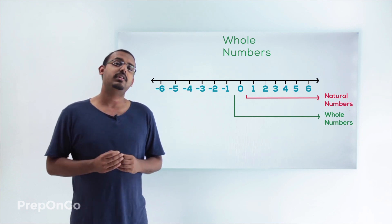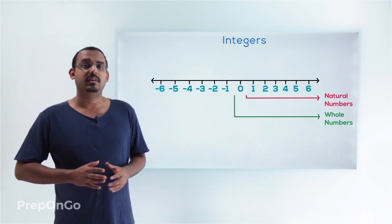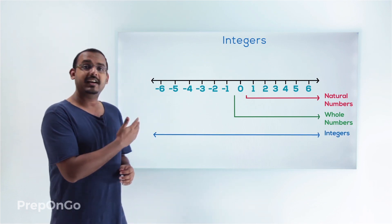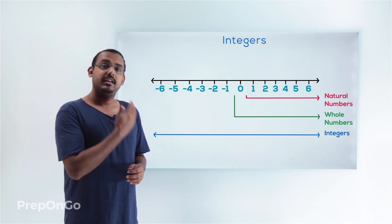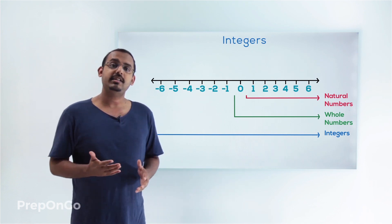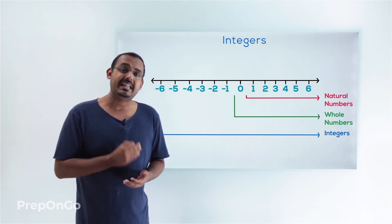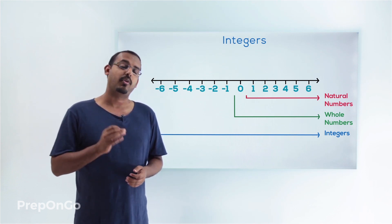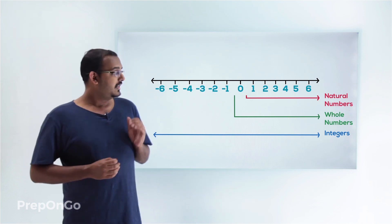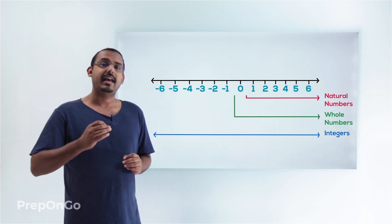We have also learned about integers. Integers are all the numbers which lie on the number line — all the negative numbers, the number 0, and all the positive numbers together comprise the integers. Integers also do not have any decimal point or any fractional value. So these are natural numbers, whole numbers, and integers.